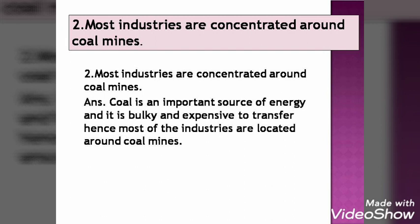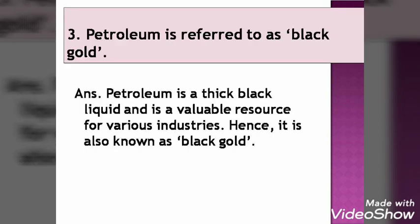The third one: petroleum is referred to as black gold. Petroleum is black in color — it is a thick black liquid, that is why 'black.' And 'gold' because it is very valuable. It is very important in industries and also costly, because extracting petroleum is not an easy task. It is expensive. So because of its value and color, it is known as black gold.